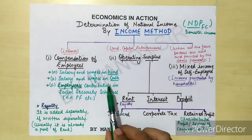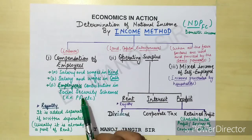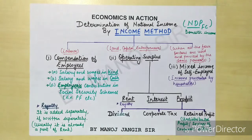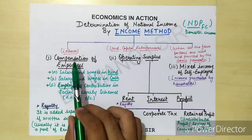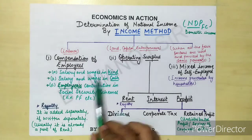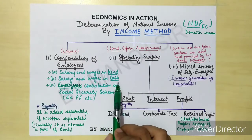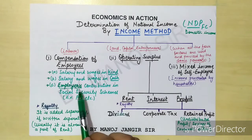When the employer gives a contribution, we consider it part of salary. Examples of salary in kind include house facility, free-of-cost education, and free-of-cost lunch. So all these things are a type of salary and wages in kind. To summarize, compensation of employees has three sub-heads: salary and wages in kind, salary and wages in cash, and employer's contribution in social security schemes.